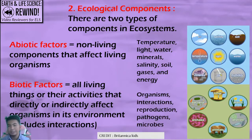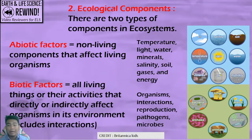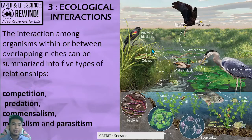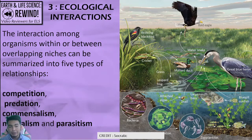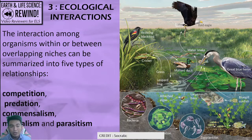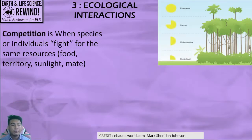Things like organisms, their interactions, reproduction, pathogens, and microorganisms are all part of the biotic factors. Interactions among organisms within or between their niches or roles are summarized into five types.